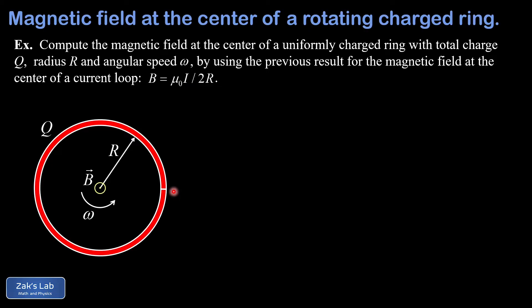My preference is to introduce the idea of linear charge density as we do this calculation. The linear charge density, notated by a lowercase lambda, is the charge per unit length, or Q divided by L, and that has units of coulombs per meter. This means we can always find the total charge contained in a length L by rearranging as Q equals lambda times L — if you take the coulombs per meter and multiply by meters, you get coulombs.